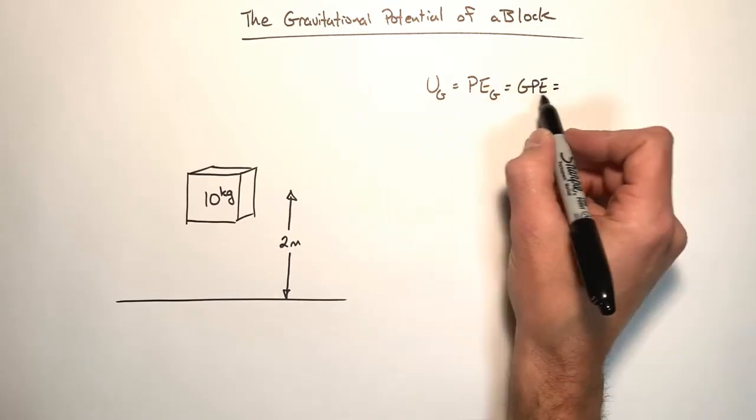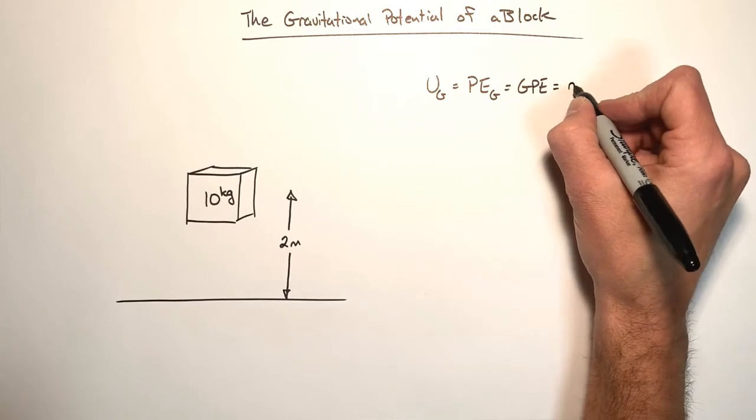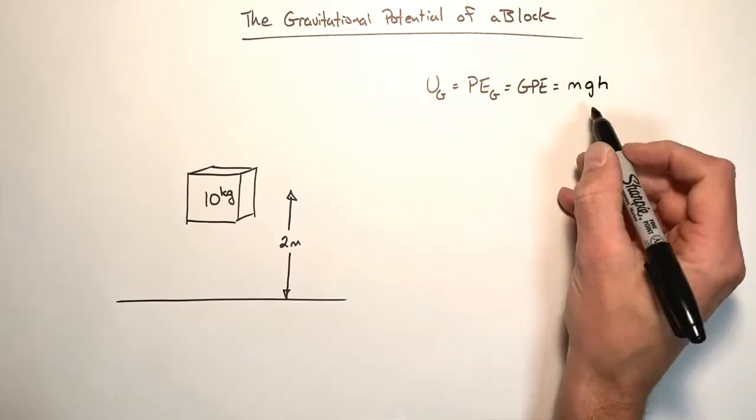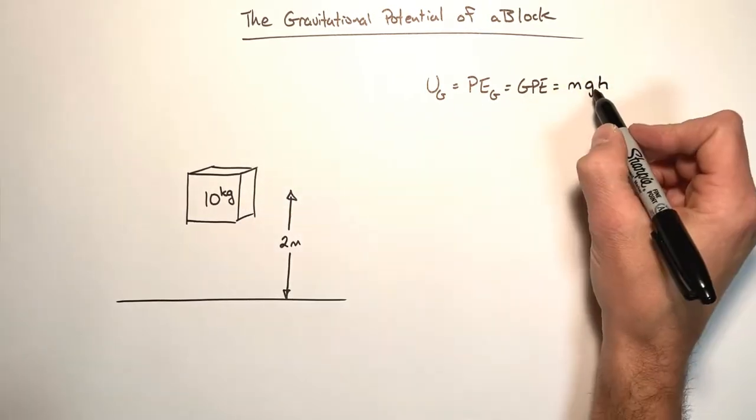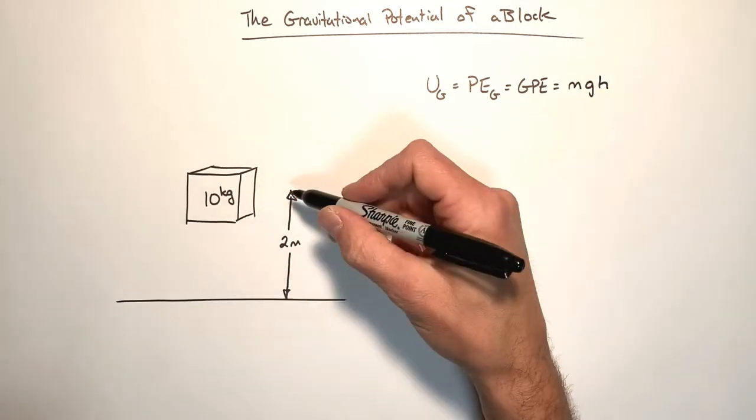But this, regardless of how you express this, it's going to be m, g, h. Where m is the mass of the block, g is the acceleration due to gravity, and h is the height of the object.